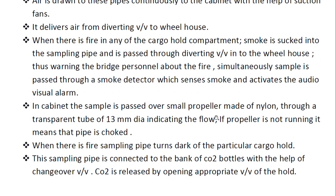Inside the cabinet, the sample is passed through a small propeller made of nylon, through a transparent tube of 13 mm diameter — this tube serves as an indication. When there is a dirty or smoky sample, the tube will turn black or change color. If the propeller is not running, it indicates the pipe is choked. When there is a fire, the sampling pipe of the particular cargo hold turns dark — since there is a separate sampling pipe for each cargo hold, the affected unit can be identified.